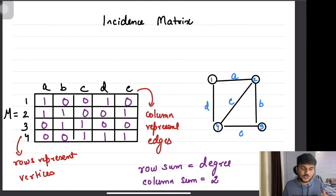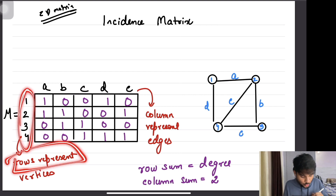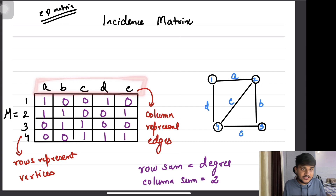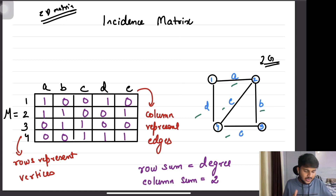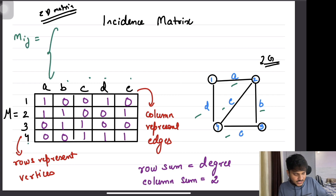Now there is one more very interesting representation called the incidence matrix — you will find very few tutorials discussing it. The incidence matrix, often called M, is also a 2D array. The number of rows equals the number of vertices. The best part is that the number of columns equals the number of edges. So if this is your graph, with five edges named A, B, C, D, E and four vertices, you get a 4×5 matrix.